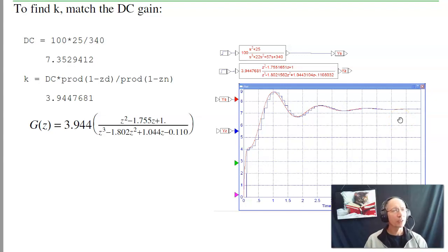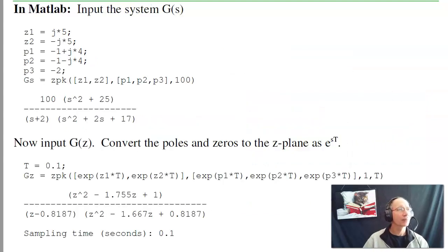So real poles, complex poles, they all convert as e^(sT). And in MATLAB, again, I can do that. Here's my zeros. There's my poles. Here's G(s). In the Z plane, the zeros convert as e^(sT). Poles convert as e^(sT).